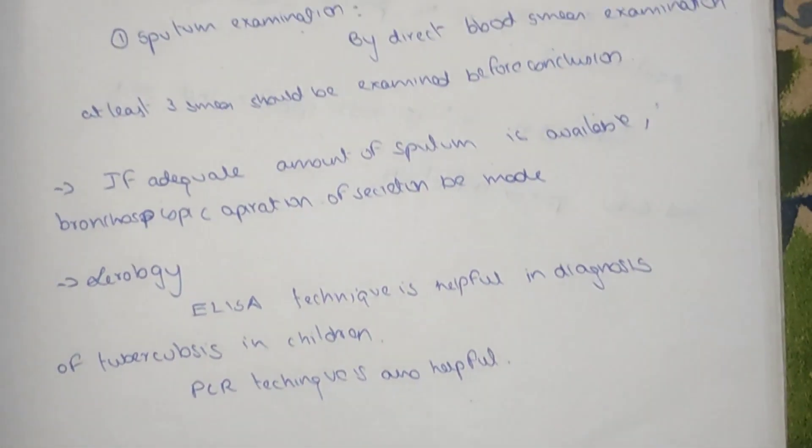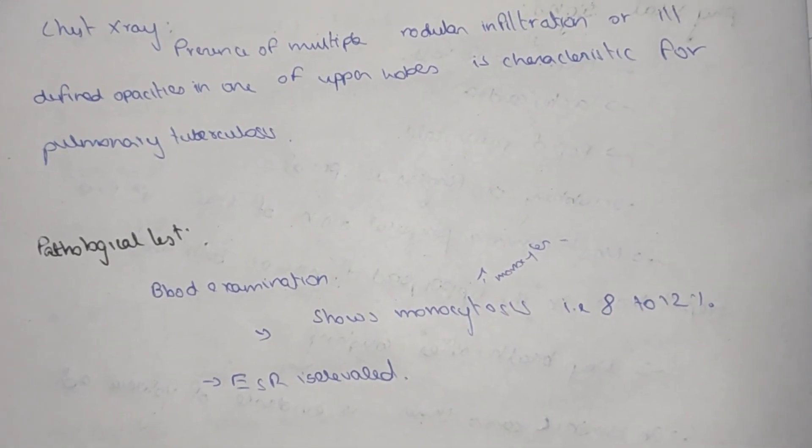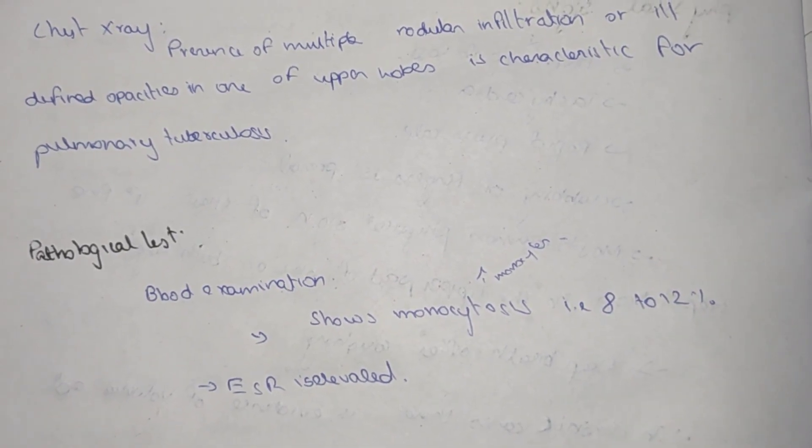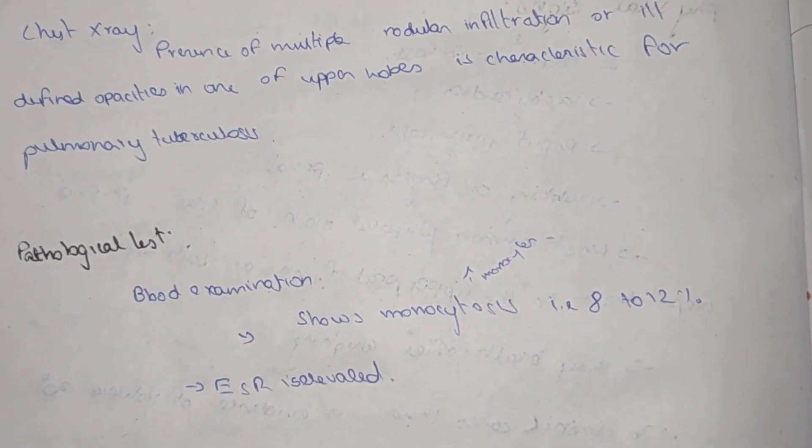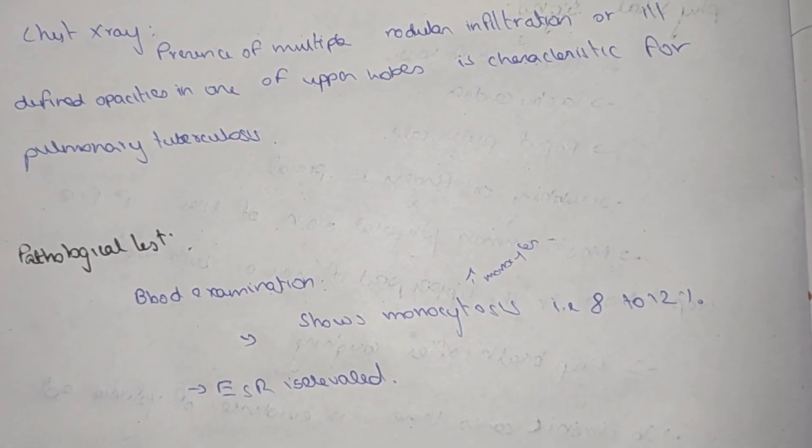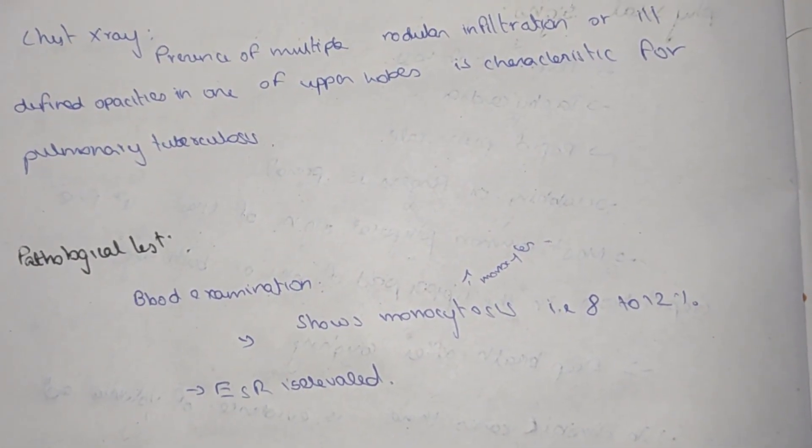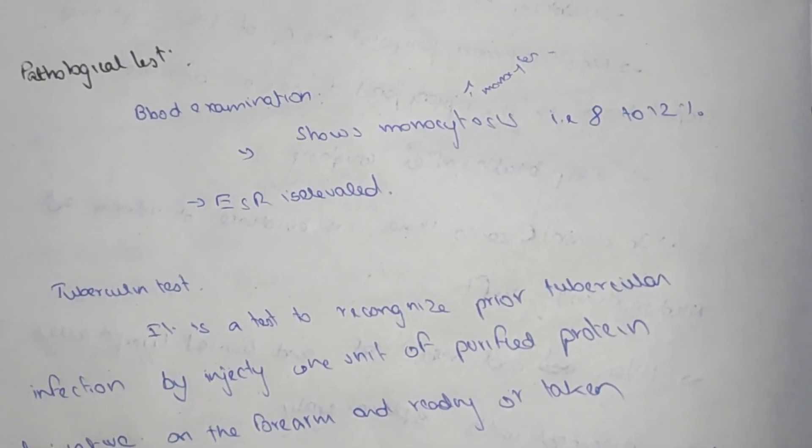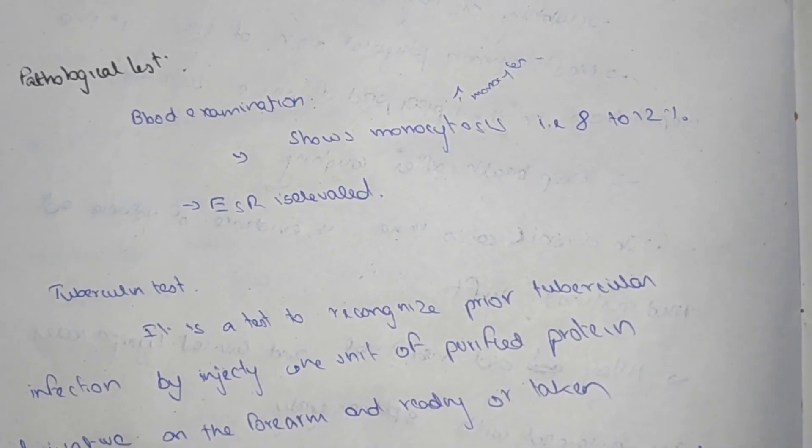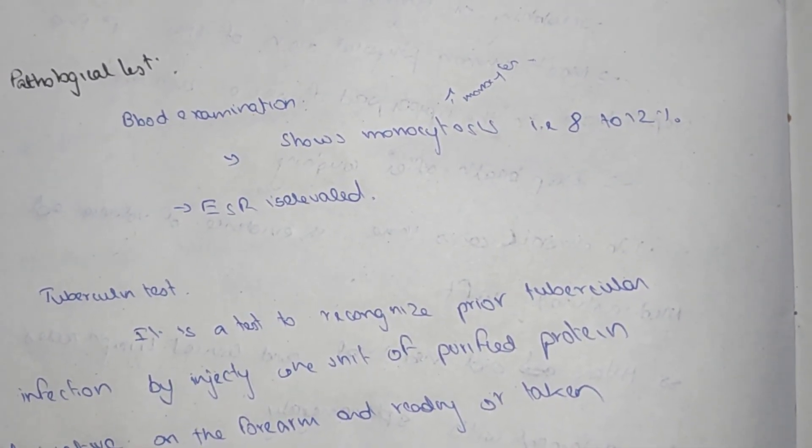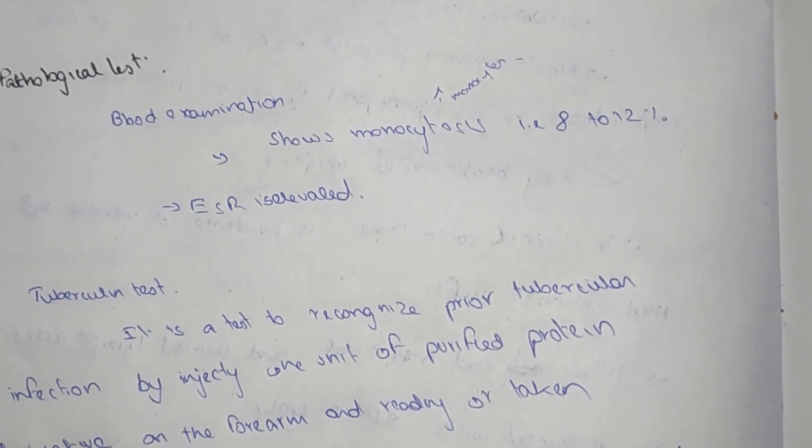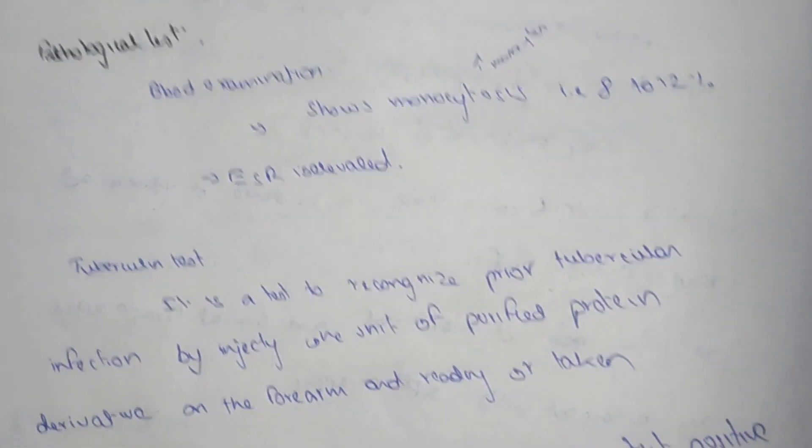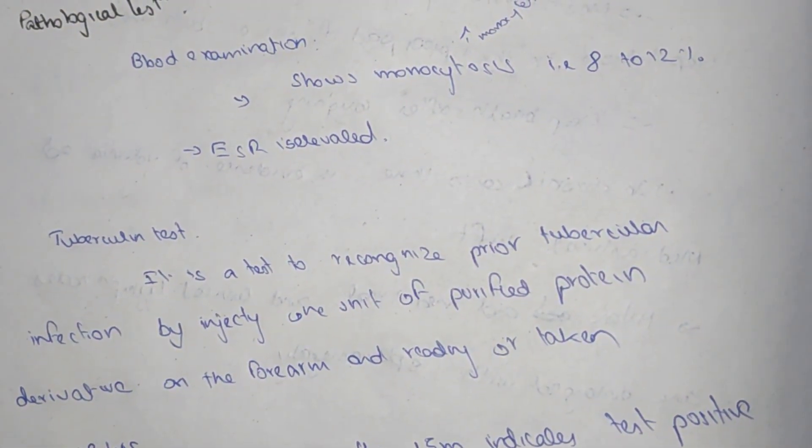Chest X-ray: presence of multi-nodular infiltration and ill-defined opacity, calcification, one of the upper lobes which is characteristic of pulmonary tuberculosis. Pathological test: blood examination shows monocytosis, increase in monocyte count 8-12 percent. ESR elevated - erythrocyte sedimentation rate.